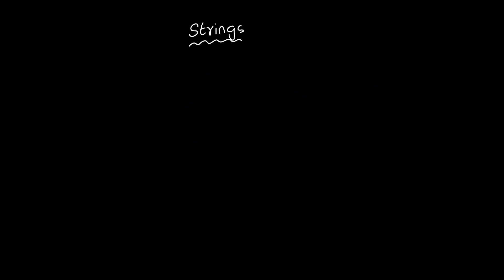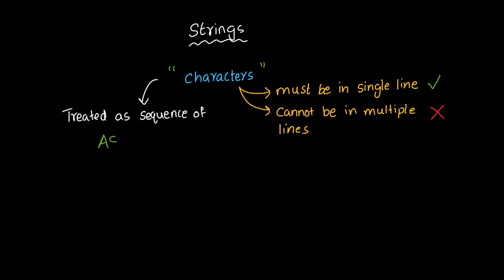Strings. A string is a sequence of characters that are enclosed by double quotes. The restriction on a string is that it must be contained on a single line, that is, without a carriage return. It cannot be on multiple lines. Strings are treated as a sequence of 1-byte ASCII values.